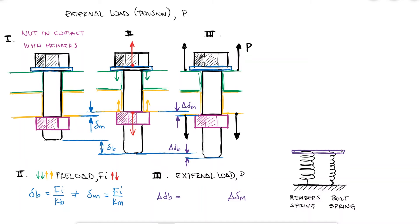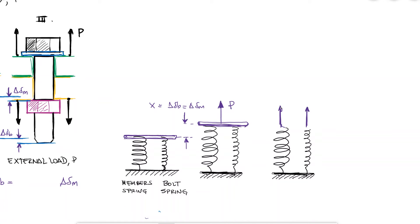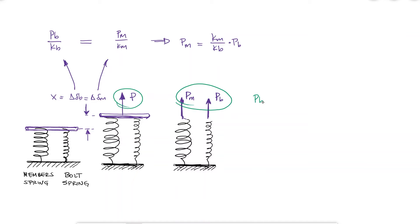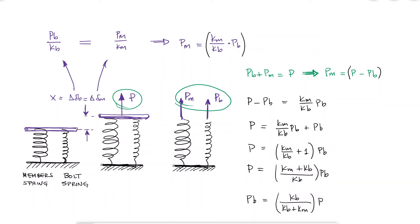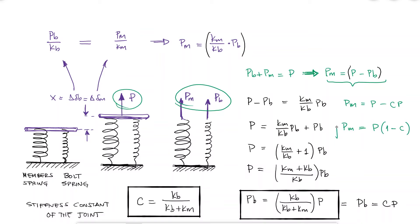The external load P is affecting both the members and the bolt, causing them to deform the same amount, where part of P goes to the bolt and part of P goes to the members. Solving for PM gives us KM over KB times PB, and since PB plus PM equals P, PM is also P minus PB. Substituting these equations and solving for PB, we get an expression that allows us to calculate the part of the external load that goes into the bolt, which is sometimes written as C times P, where C is the stiffness constant of the joint. Substituting this in the equation gives us an expression for PM, the part of the external load that goes into the members.